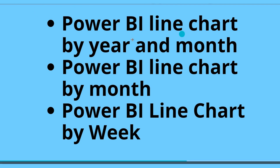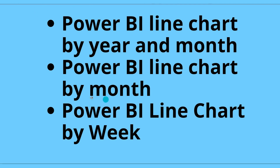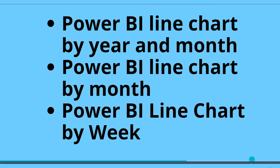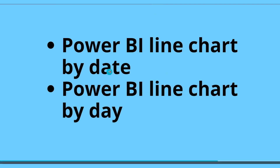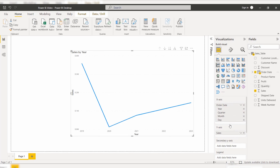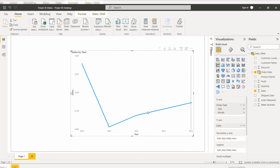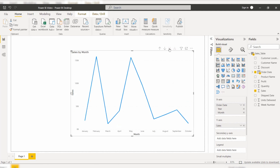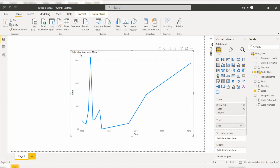Now we will see a few examples. First, to display the line chart by year and month: drag and drop the date field into the x-axis. If I want to display sales only by year and month, I remove the quarter and day fields. Then choose drill down for the next level and you can see it displays the sales by year and month.